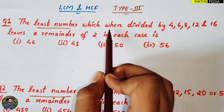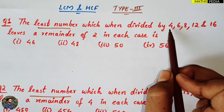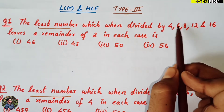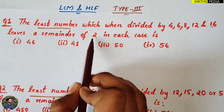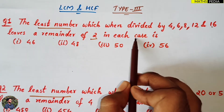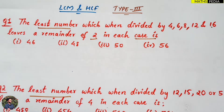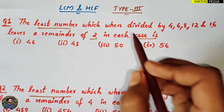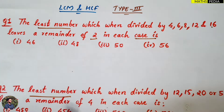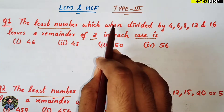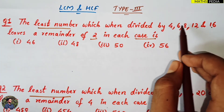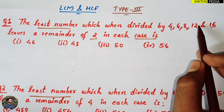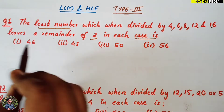The least number which when divided by 4, 6, 8, 12, and 16 leaves the remainder 2 in each case.